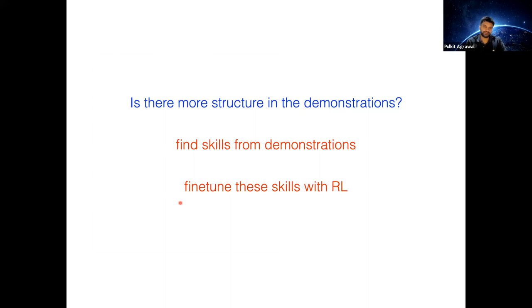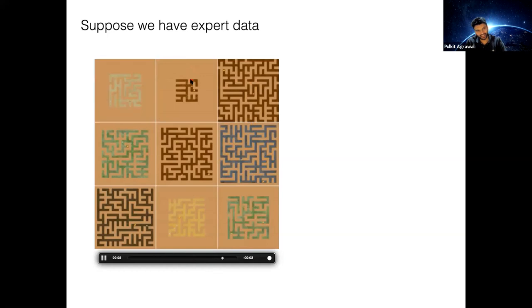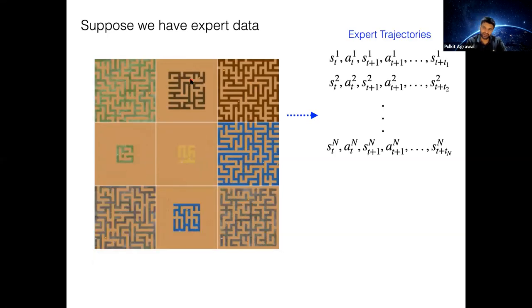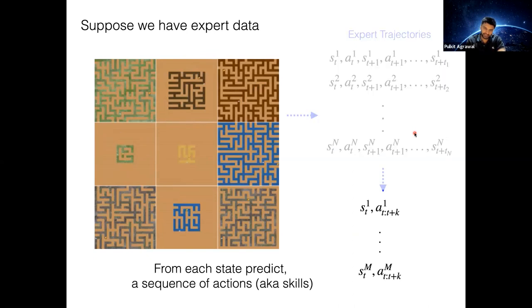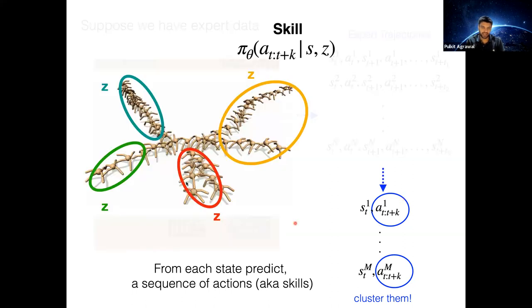Instead of directly imitating things for every state, first we find skills and then use RL to decide how to combine them. Consider a game where the agent needs to go to the goal. Given expert data — state-action trajectories — instead of predicting just one action from a state, we want to predict a sequence of actions. To make this easier, we can try to cluster them. For example, given a state: now I need to pick the block, now I need to place the block — reasoning in somewhat more abstract terms.